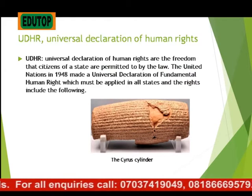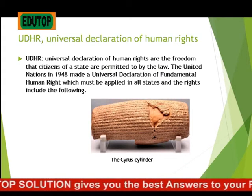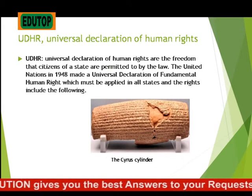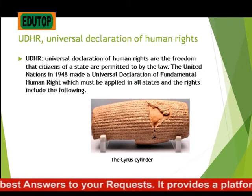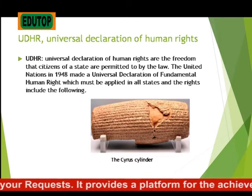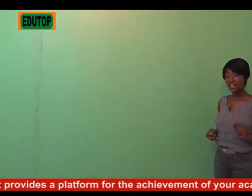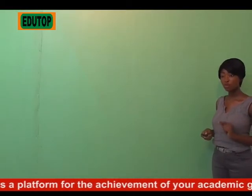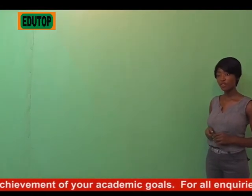The Universal Declaration of Human Rights are the freedoms the citizens of a state are permitted to enjoy by the law. The United Nations in 1948 made a Universal Declaration of Fundamental Human Rights, which must be applied in all states. Now let us move on to the historical background of human rights.